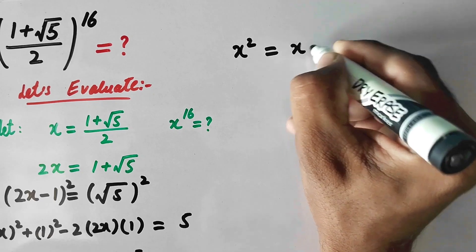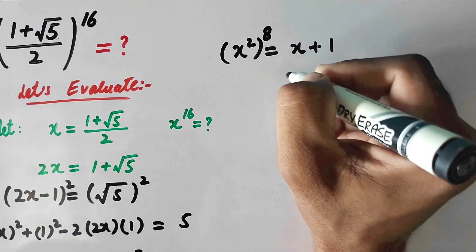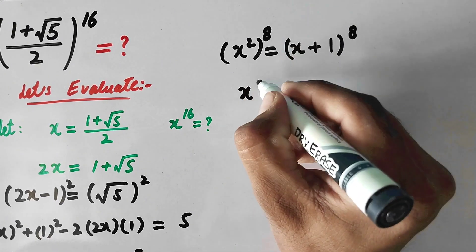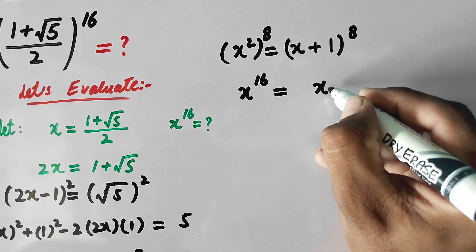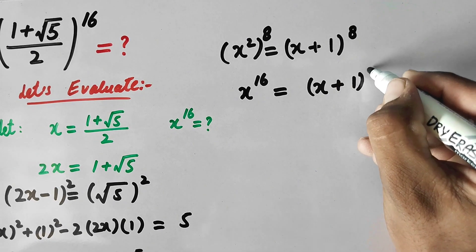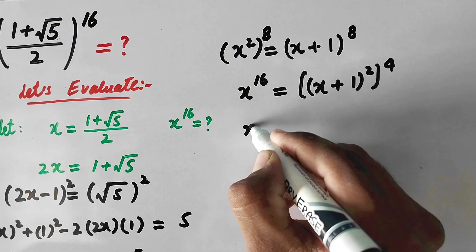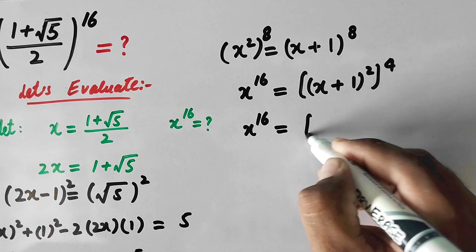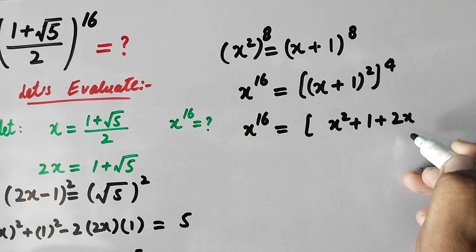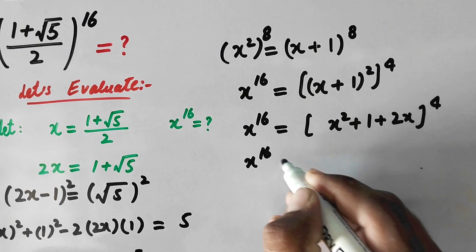Now x squared is equal to x plus 1. We will take the power 8 on both sides, so we get x to the power 16 equal to (x plus 1) to the power 8. We spread this as: (x squared plus 1 plus 2x) to the power 4, and x to the power 16 equals (x squared plus 1 plus 2x) to the power 4.